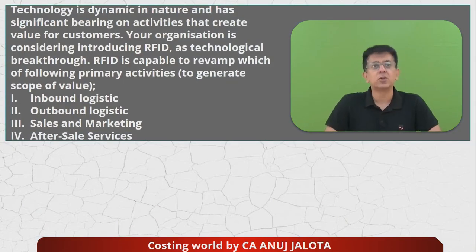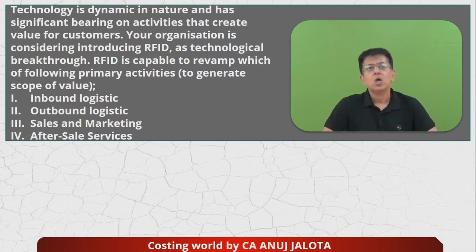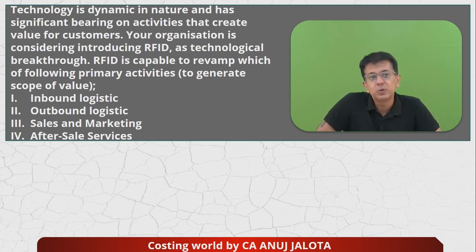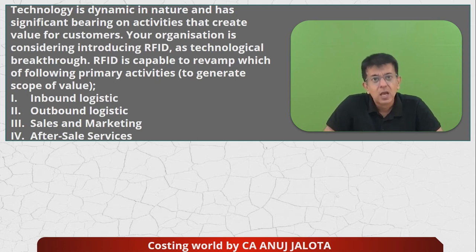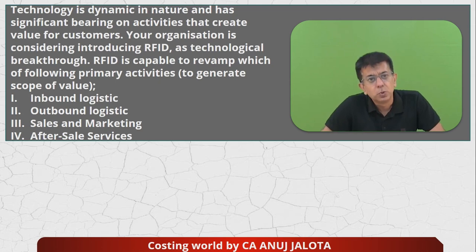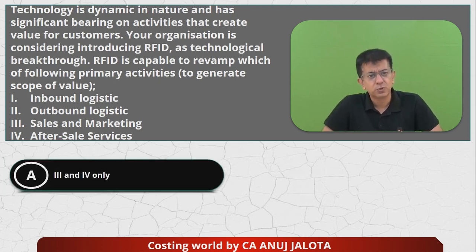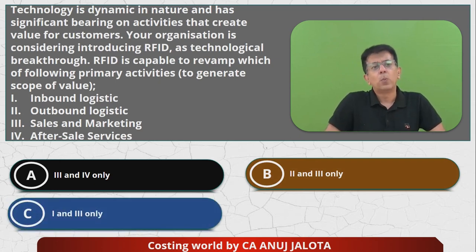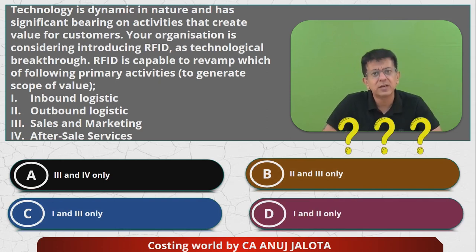Today's question: Technology is dynamic in nature and has significant bearing on activities that create value for consumers. An organization is considering introducing RFID — Radio Frequency Identification — as a technological breakthrough. RFID is capable of revamping which of the following primary activities to generate scope of the value chain? Although there are five primary activities, ICAI mentioned four: inbound logistics, outbound logistics, sales and marketing, and after-sale service. Options are: three and four only; two and three; one and three; or one and two.